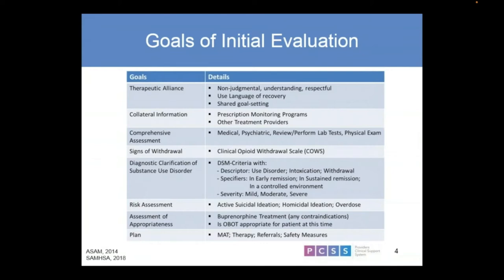Sometimes that one little piece turns the entire scenario on its head and is very beneficial — or lets us know things aren't going as well as we thought. A comprehensive assessment — medical, psychiatric, labs, and physical exam — is part of this initial evaluation. Going over and assessing signs of withdrawal, specifically using tools like the opioid withdrawal scale or COWS scale to objectively categorize where somebody is in their withdrawal phase. Using DSM criteria is important, and diagnosing as specifically as we can matters.